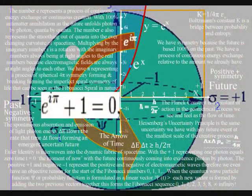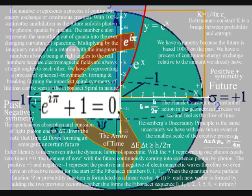The idea is that E would represent a rate of change as time and space unfolds, with Euler's identity being interwoven into the dynamic fabric of space-time. With the plus one representing one photon equals zero time, T equals zero, the moment of now, within an individual reference frame. Within such a reference frame, the number E represents a constant of continuous change, of either growth or decay.